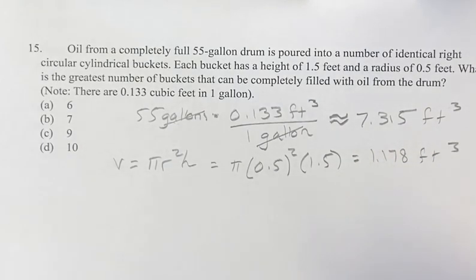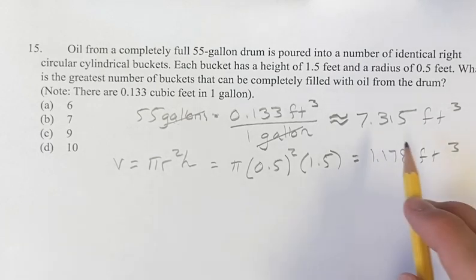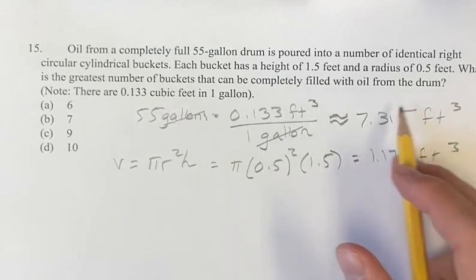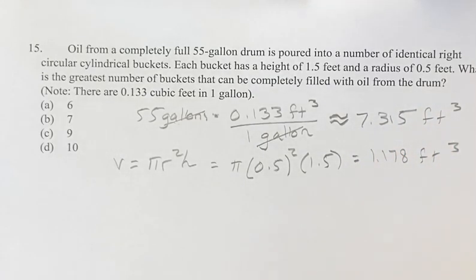So now how many buckets can be filled with oil from the drum? We just have to divide the drum by the volume of the buckets. So you're dividing 7.315 by 1.178.